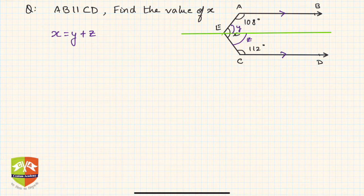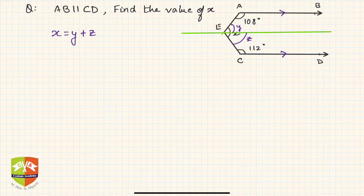Now let's see about y. If you see, let me put a name here. Let's say this is F. Before that, you have to mention that you have done a construction. The construction is EF parallel to AB parallel to CD. So you write EF parallel to AB and CD drawn.